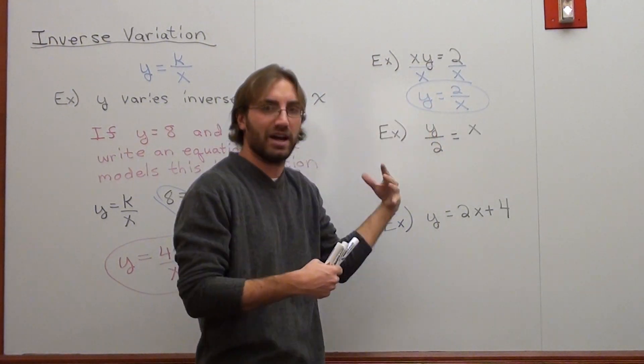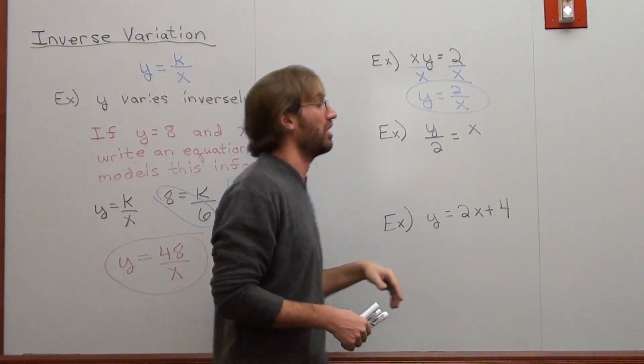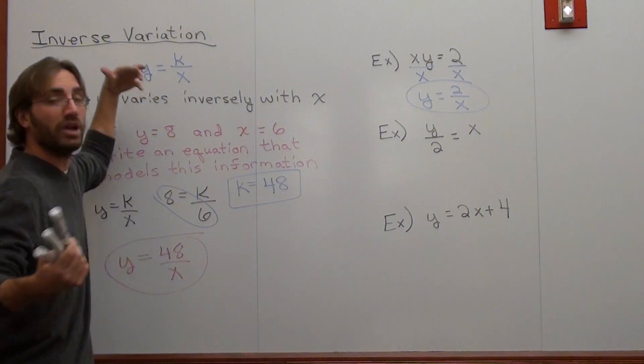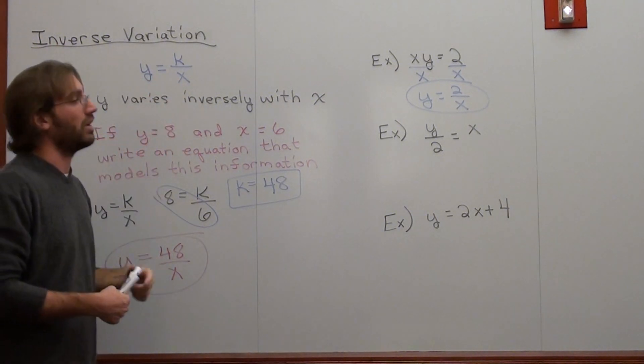y is right here. x is in the denominator. It's an inverse variation type problem. As long as it models this form, y equals k over x, where k is some number and x is in the denominator. You're good to go.